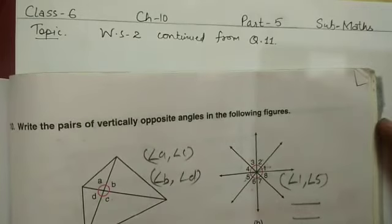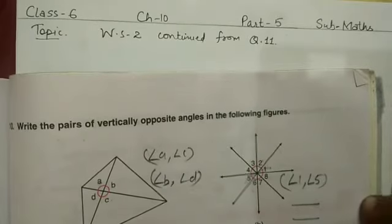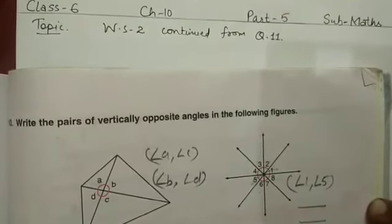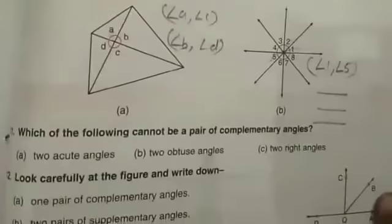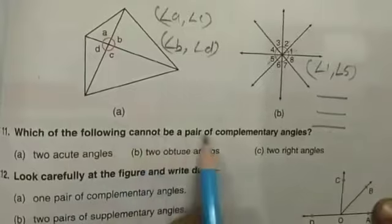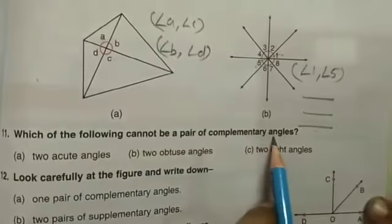Hello students, today we will continue our worksheet number 2 from question number 11. Question is, which of the following cannot be a pair of complementary angles?